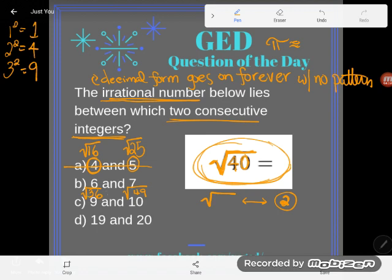Therefore, the square root of forty, its answer lies somewhere between six and seven. I should say its decimal form does. It'd be six point something, something, something, something, something.